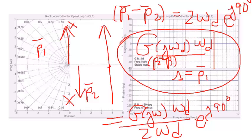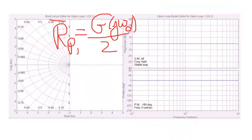The omega d's are going to cancel out. And this will leave me with my final answer, which is that rp1 of j omega will be equal to g of j omega over 2 times e to the j minus 90 degrees. If I take that pole and bring it to the numerator.